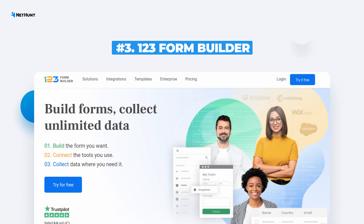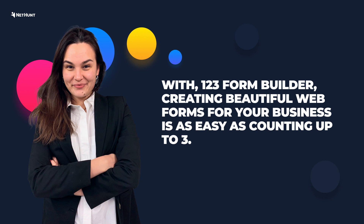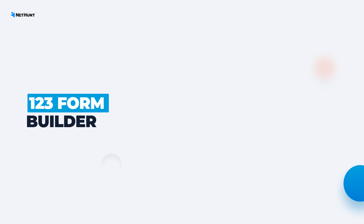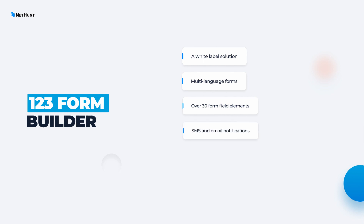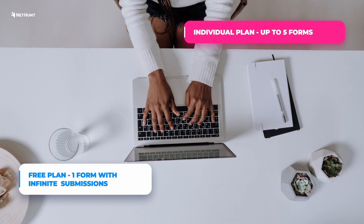Number 3: 123 Form Builder. The creators claim that with 123 Form Builder, it's possible to create any sort of form with the utmost ease — just like counting 1, 2, 3. Looking at the functionality this builder offers, we're inclined to believe it. What's good about 123 Form Builder: a white-label solution for fully integrating into your products for internal use or reselling; multi-language forms; a selection of field types including text, signatures, captcha, scale, social buttons and more; SMS and email notifications about form submissions; and security features like smart captcha, reCAPTCHA, SSL, password protection, and country filters. The free plan allows you to create one form with an unlimited number of submissions, while the individual plan allows up to 5 online forms.